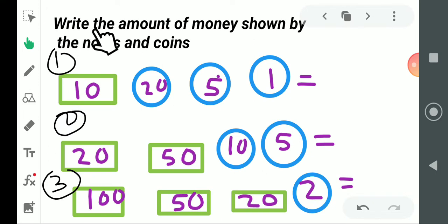First one is write the amount of money shown by the notes and coins. So the notes are shown in the rectangle and coins are shown in the circle. So we add the final amount here. So 10 plus 20 equals 30, 30 plus 5 equals 35, 35 plus 1 equals 36.